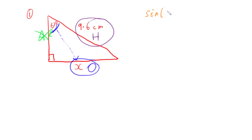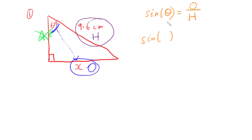That would be the sine ratio. The sine ratio is: sine of the angle equals the opposite side divided by the hypotenuse. So we write down our ratio after identifying it's the one we need, then substitute our numbers in. Sine of 61 degrees — it's good to write the degree symbol in our working out.